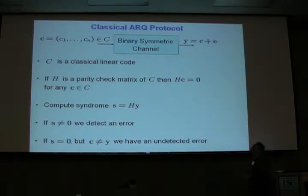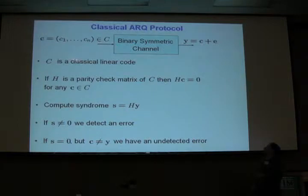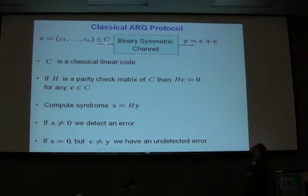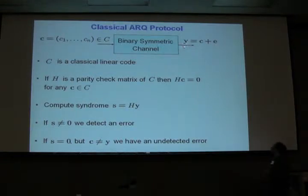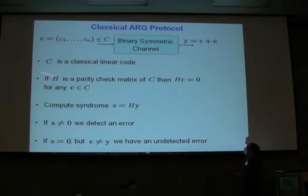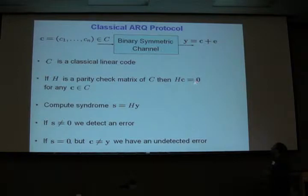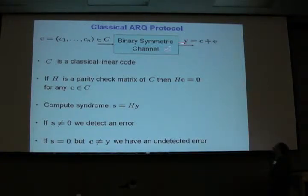Let's start with classical ARQ protocol. It's very simple but still efficient and popular. In this protocol, we pick up some linear code C and transmit through a binary symmetric channel codewords of this classical code C. On the other end of the channel, we receive vector Y, which is the sum of transmitted codeword C and an error vector E. If H is the parity check matrix of our classical code C, then by definition H times C equals 0. So it's very easy to decide whether Y is a codeword of code C or not.